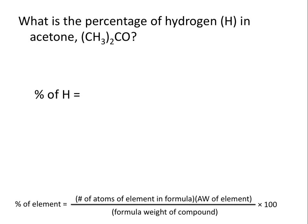So we need to multiply the subscript on hydrogen, 3, by 2 to give us 6 atoms of hydrogen in every molecule of acetone.